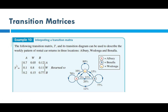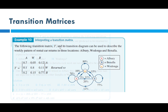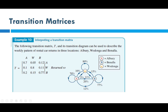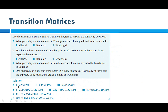Next example uses the transition matrix and diagram for three locations — Albury, Wodonga, and Benalla. First question: what percentage of cars rented in Wodonga each week are predicted to be returned to Albury? Looking at the diagram, rented in Wodonga returned to Albury — follow the arrowhead — that's 5%. So the answer is 0.05 or 5%.